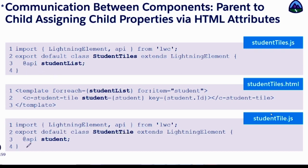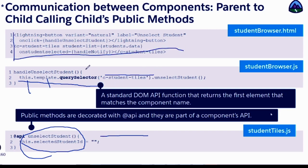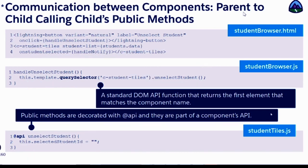So I have a student tile component — this is my public property. Here I'm using this.template.querySelector and looking for the child component. What it does is go to the current component's template, load the whole template, and search for student-tile. From that element, it calls dot unselect student. unSelectStudent is a public method in the student-hyphen-tile component. So this is the way to call a public method from the child component in your parent.